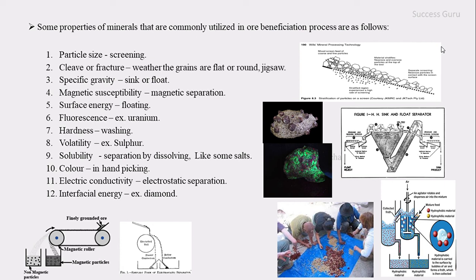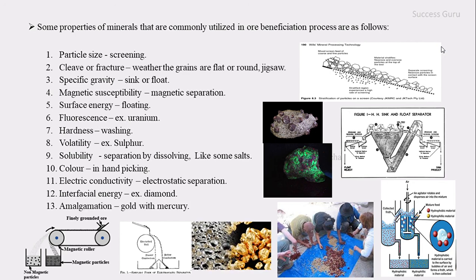The next property is interfacial energy. To break certain minerals it may take a lot of energy. For example, diamond has very high interfacial energy and it is extremely hard to break — this property is also utilized in ore dressing contexts.